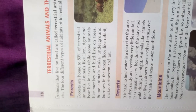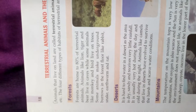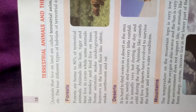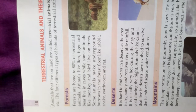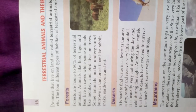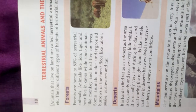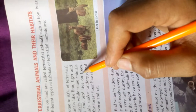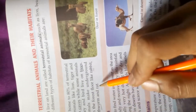Animals like lions, tigers, bears, monkeys, and birds live in forests. Some animals live among trees and vines, some live in trees, and some animals like rabbits, snakes, and earthworms live underground. So these are the different houses of forest animals.